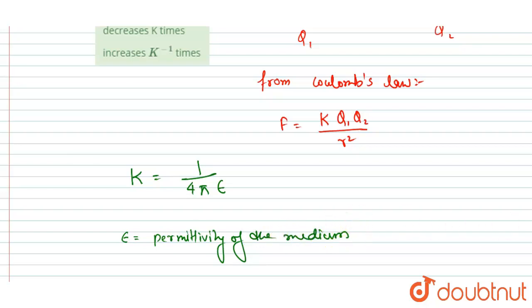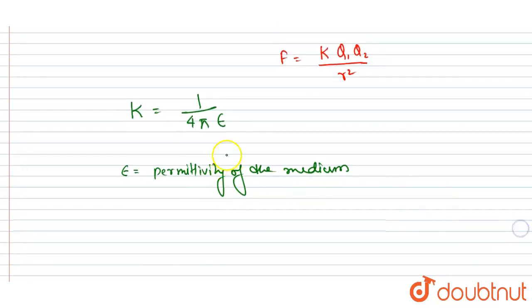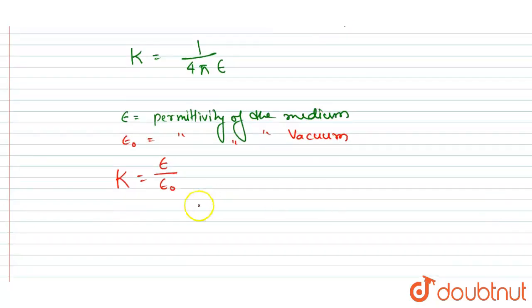So permittivity of the medium is epsilon. And if I talk about the dielectric constant, dielectric constant K is equals to permittivity of the medium by permittivity of the vacuum. So epsilon naught is permittivity of the vacuum. So you could see here the permittivity of the medium is dielectric constant times the permittivity of the vacuum.